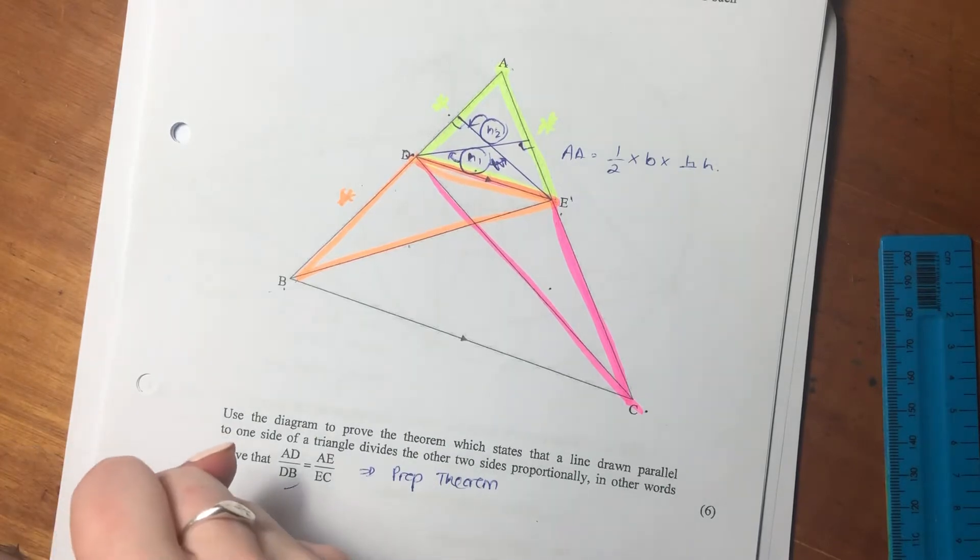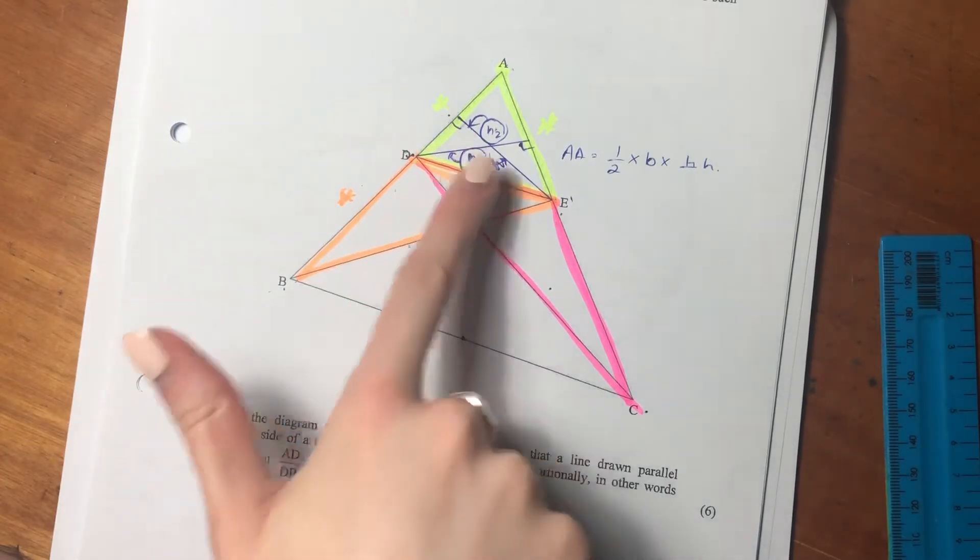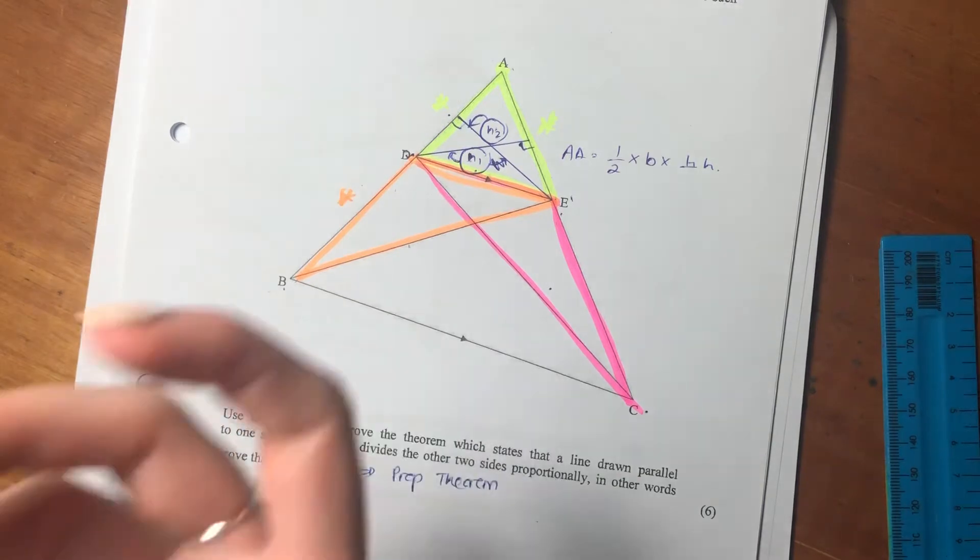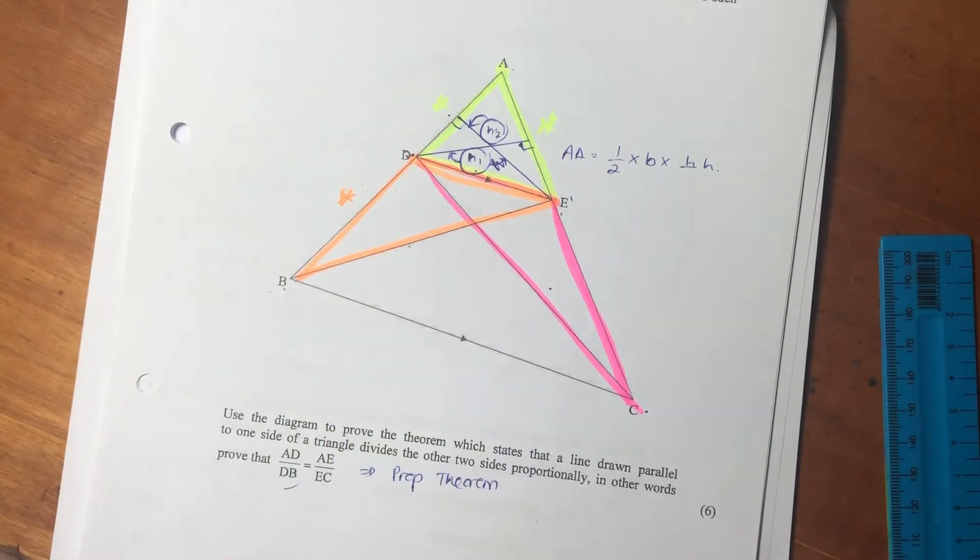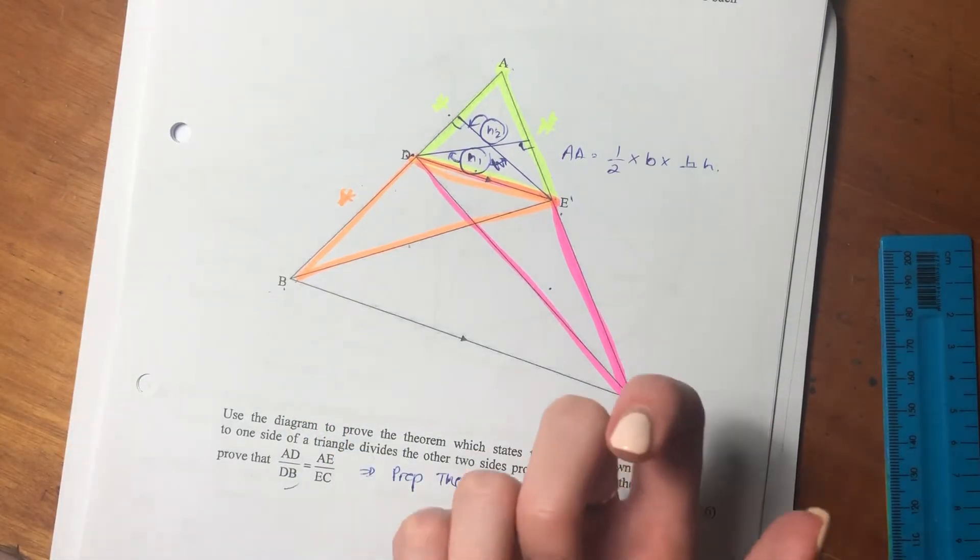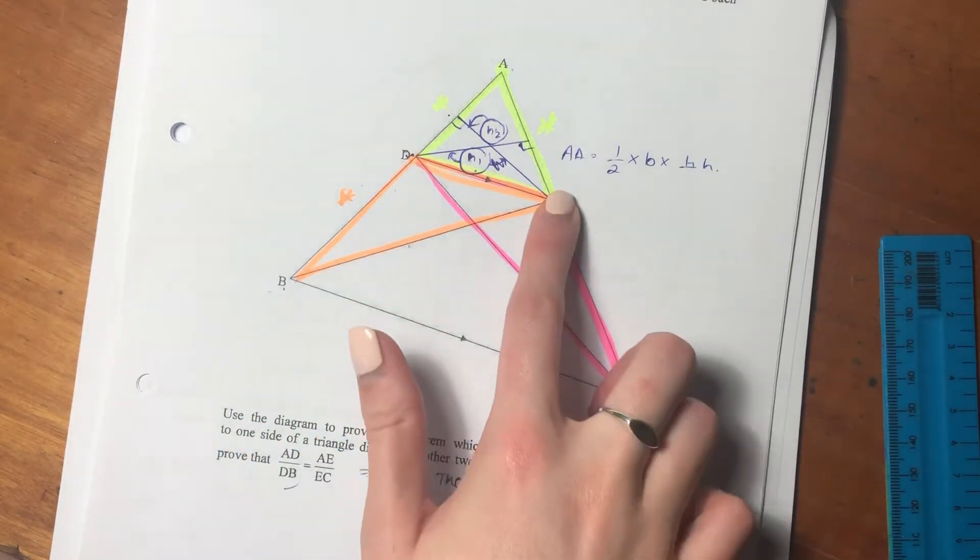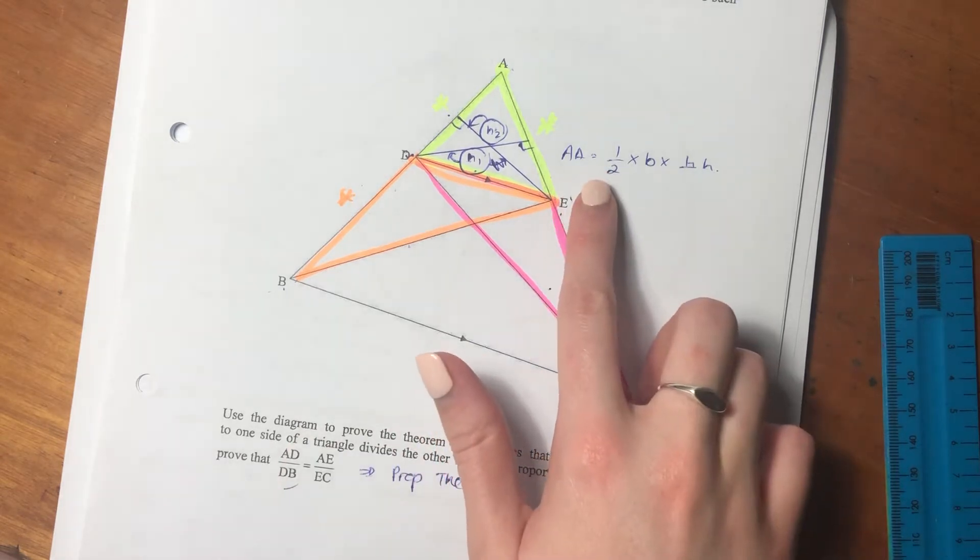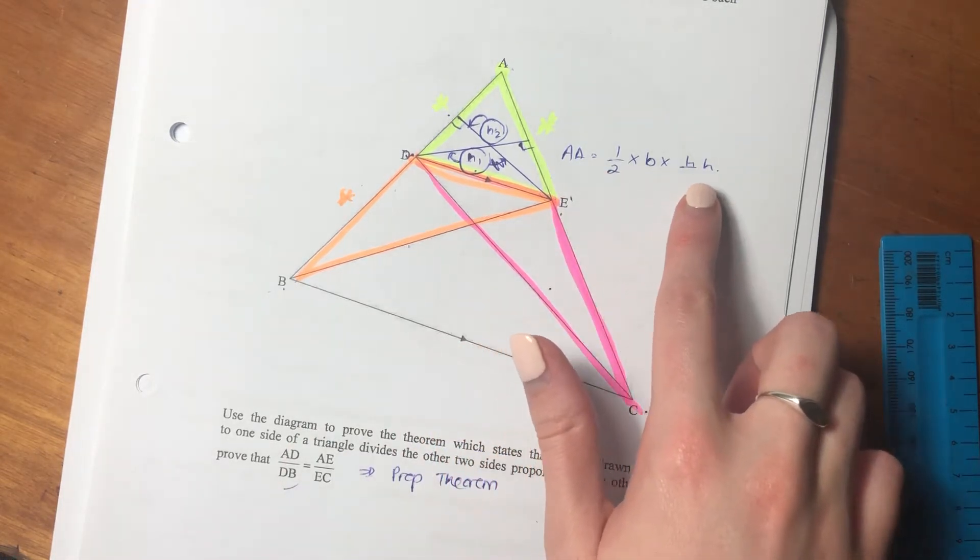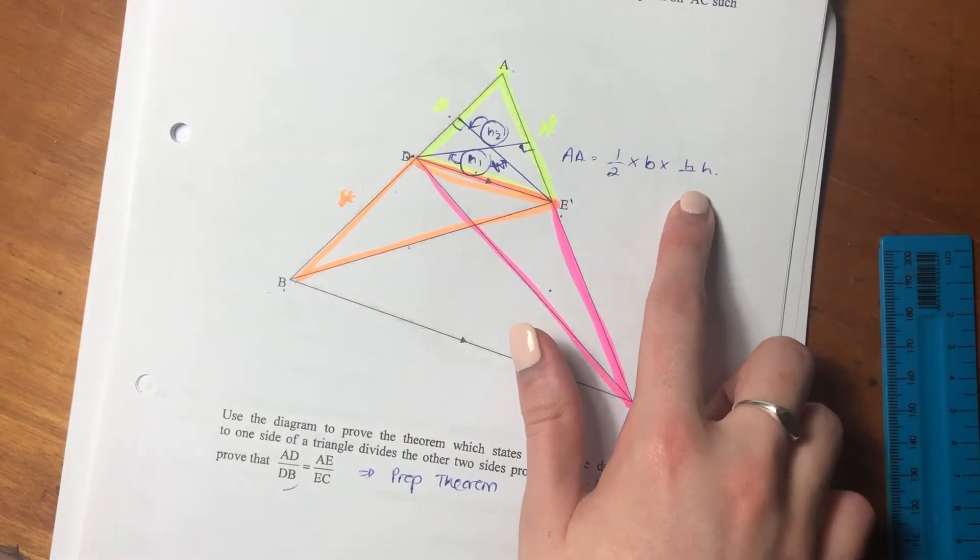So what I've done is I've drawn in two heights here. You see that? Now, you could be thinking, Marks, why are you doing that? Well, what we need to do, in order to find the area of these two triangles here, we need the perpendicular height, because area equals half times base times perpendicular height.